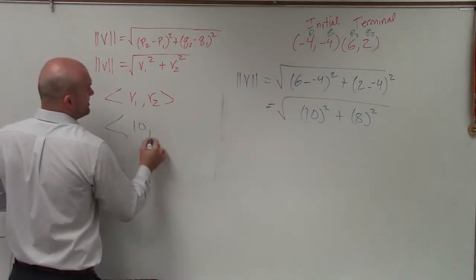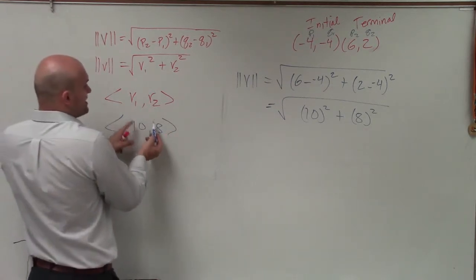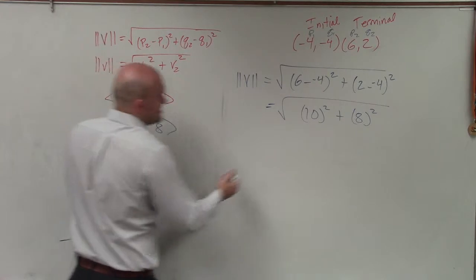That component form for this would be 10 comma 8. So really, if I just found 10 comma 8 and plugged that into the formula, it'd be the exact same thing.